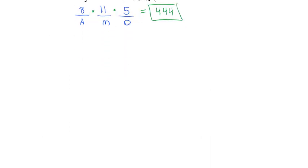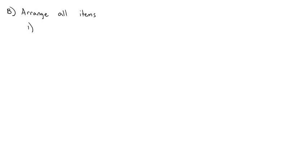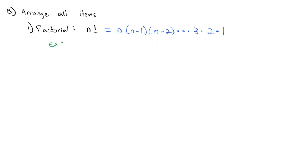Now, often we're not just counting possibilities, but we need to not only count them but also arrange them. This brings up our second strategy for counting: arranging all the items. The way we calculate arranging all the items is we use what's called a factorial, where you'll see some number with an exclamation mark after it. In factorial, we take the number N, multiply by one less than it, times another one less, all the way down until 3, 2, 1. So for example, 5 factorial means 5 times 4 times 3 times 2 times 1, which equals 120.